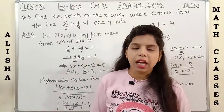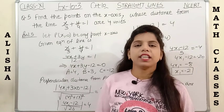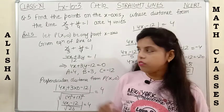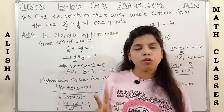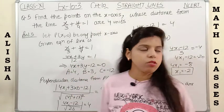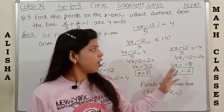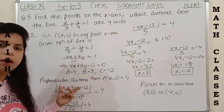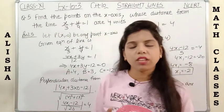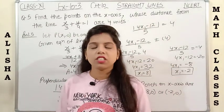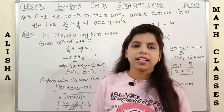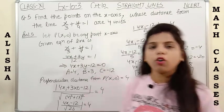Today we learned how to reduce equations into normal form, intercept form, and slope-intercept form. We also solved two questions on finding the distance of a point from a line using the formula |ax₁ + by₁ + c| / √(a² + b²). Thank you so much for watching Alicia Mass Classes.